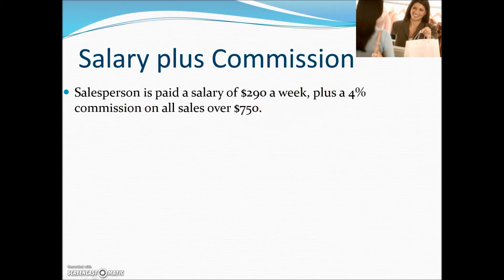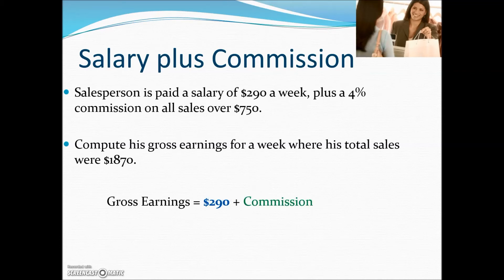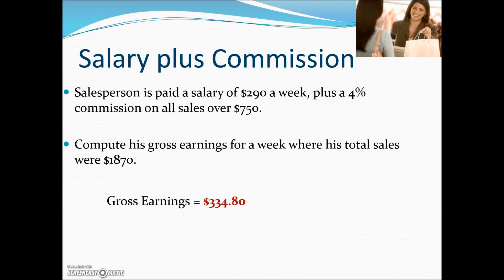Sales above the $750 quota earn the 4% commission. For a week where total sales were $1,870, the salary is $290. To calculate the commission, we subtract the $750 quota from $1,870, giving $1,120 in commissionable sales. Multiplying $1,120 by 4% gives the commission amount. Adding the $290 salary plus the commission on sales over $750 gives gross earnings of $334.80 for the salesperson.